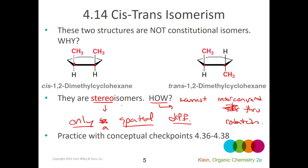These are clearly not constitutional isomers, because constitutional isomers require a difference in connectivity. If my ring had methyl groups on different carbons — say 1,2-dimethyl versus 1,3-dimethyl — those would be constitutional isomers. Constitutional isomers differ in which atoms are connected to which. But these two structures have the same atoms connected to the same atoms; they're just pointing in a different direction in space.